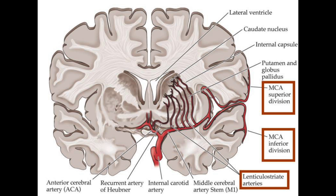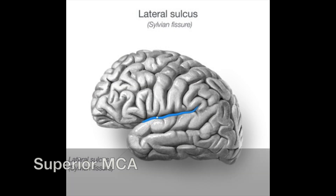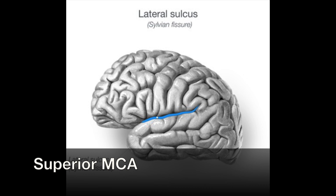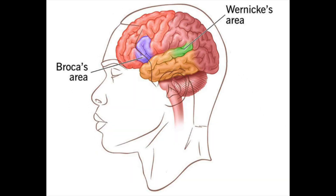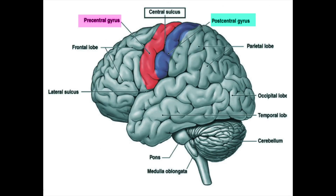There are also infarcts affecting all three regions called MCA stem infarcts. The superior division of the middle cerebral artery supplies the cortex above the sylvian fissure, including the lateral frontal lobe and usually the perirolandic cortex. The lateral frontal lobe includes Broca's area in the dominant, usually left hemisphere. The perirolandic cortex refers to the region surrounding the precentral gyrus, responsible for motor functions, and the postcentral gyrus, responsible for sensory functions.